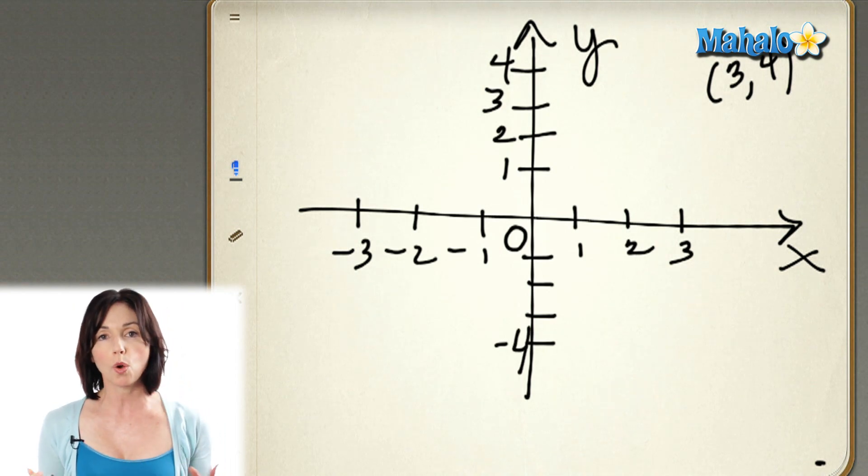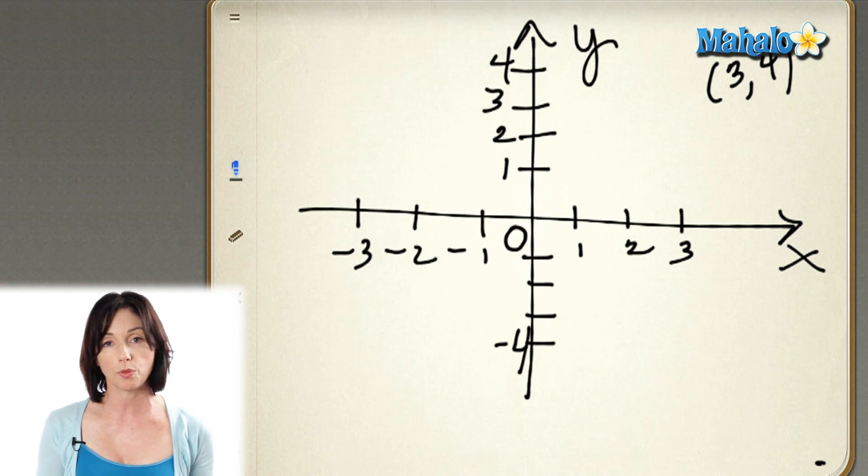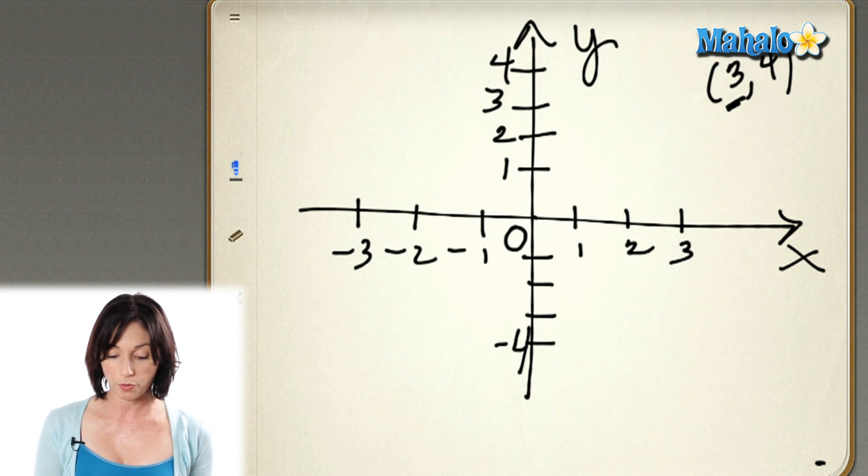So you'll see a coordinate point, something like this 3, 4. And the first thing you do is you move 3 in x. So we'll start at the origin, and we move to 3 in x.